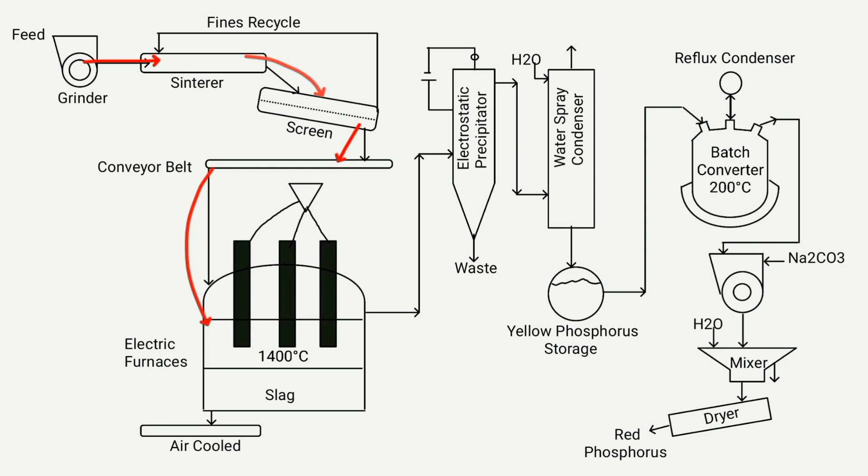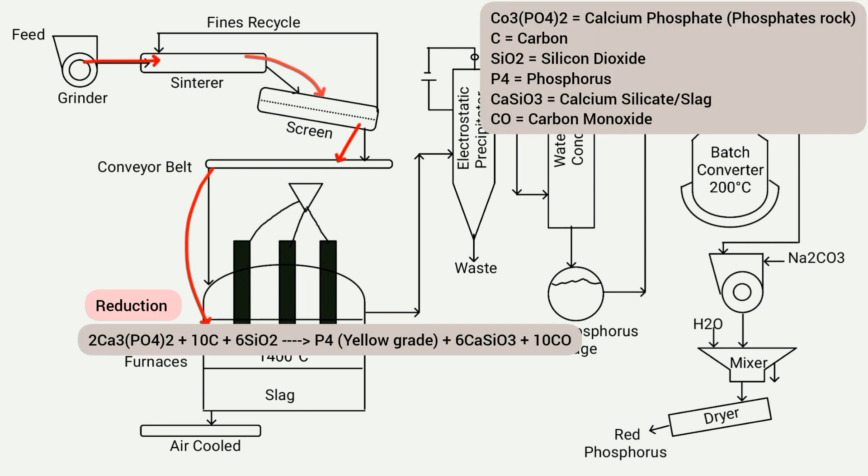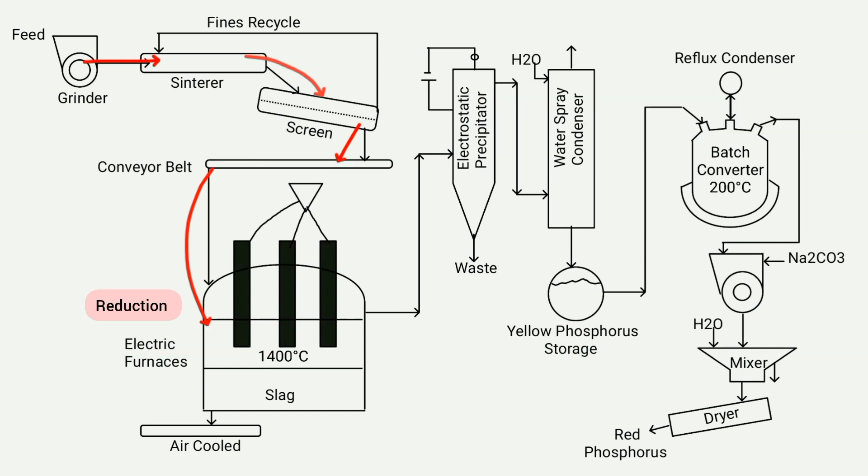The main process of reduction takes place inside the electric furnace, where the following reaction occurs, resulting in the formation of phosphorus along with a by-product in the form of slag. The slag finds applications in various industries. Furthermore, the phosphorus gas from the electric furnace, along with dust and carbon monoxide gas, is directed to an electrostatic precipitator for further treatment.